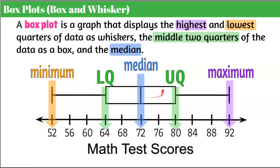Remember, the median is just the line inside the box. One important note: if you aren't given the data set a box plot represents, there are only two specific data items you know — the minimum value that starts the left whisker and the maximum value that ends the right whisker. The median could be the average of two values, so it may or may not be an actual score in the data set.